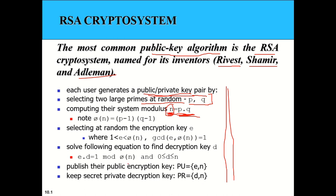Next, we find the value of phi(N). This is the totient function. Since N = P × Q, the totient function is computed as phi(N) = (P − 1) × (Q − 1). We calculate this value in the third step.